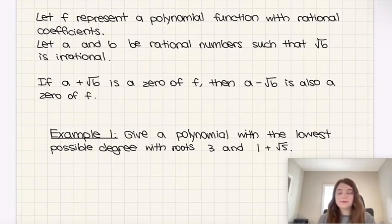Let f represent a polynomial function with rational coefficients. Let a and b be rational numbers such that root b is irrational. If a plus root b is a zero of function f, then a minus root b is also a zero of function f as well.